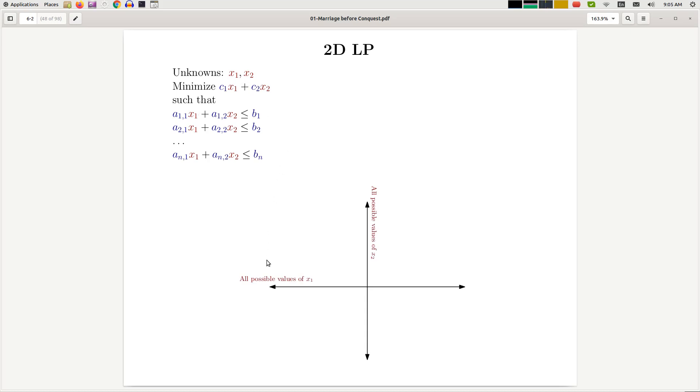In this representation, the x-axis represents all possible values of x1, and the y-axis represents all possible values of x2. Therefore, a point here with a particular coordinate, say (v, w), represents a choice of value v for x1 and value w for x2. For example, the point (4, 2) represents the case where x1 is 4 and x2 is 2.